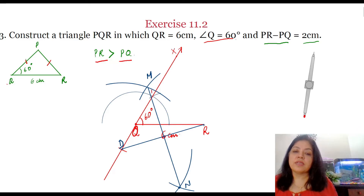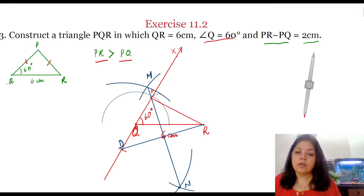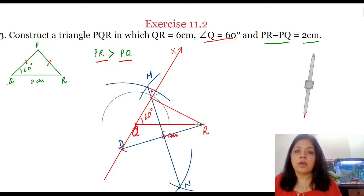This is the vertex P of triangle PQR. Now join PR to get the required triangle PQR.